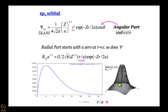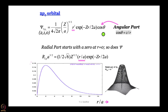Now we have to start worrying about the angular part. For the 2pz orbital, the angular part is cos θ. Recalling the relationship between Cartesian and spherical polar coordinates, cos θ equals z over r. So we can write z over r here, meaning that r in the denominator and the r in the radial part cancel each other, leaving us with something in z.